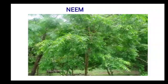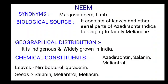Second drug: neem. Synonym of neem: Margosa, neem, lim. Biological source: it consists of leaves and other aerial parts of Azadirachta indica belonging to family Meliaceae. Parts used: leaves and other aerial parts. Species: Azadirachta indica. Family: Meliaceae. Geographical distribution: it is indigenous and widely grown in India. Chemical constituents: it contains azadirachtin, salanine and meliantrol.